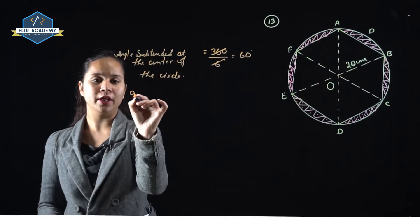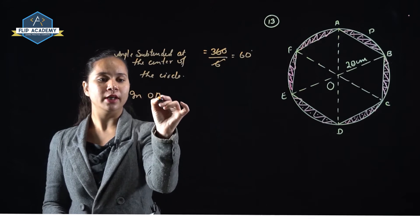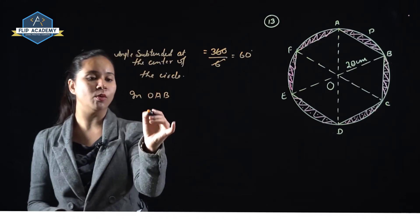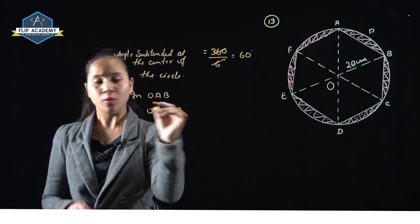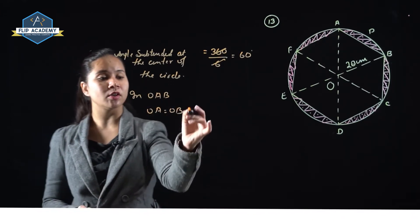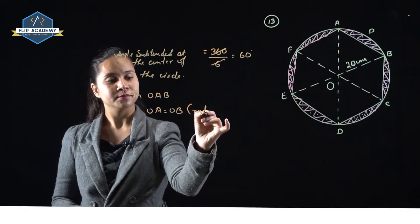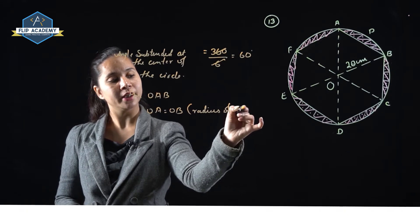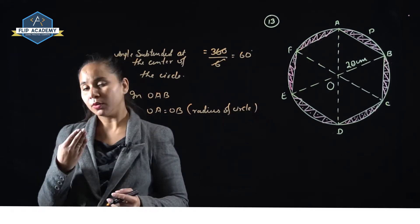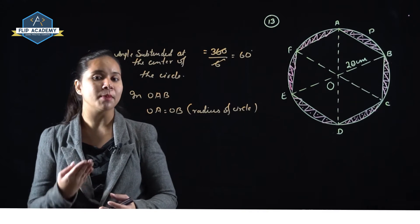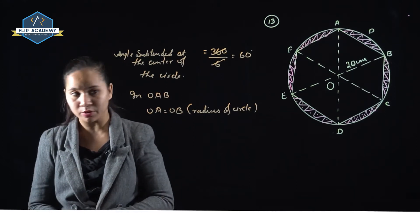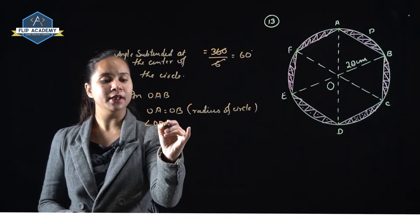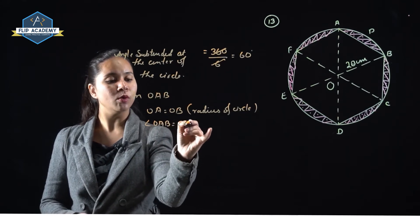In triangle OAB, OA is equal to OB. Why? Because OA and OB are both radii of the circle. Now, in a triangle, if two sides are equal, then their opposite interior angles are also equal. This means angle OAB is equal to angle OBA.